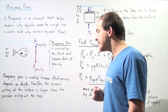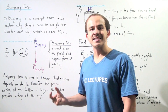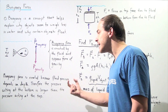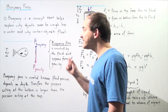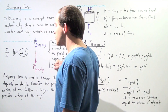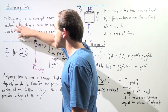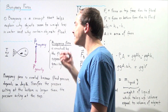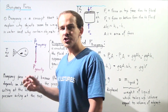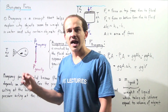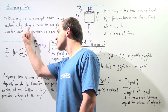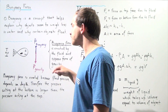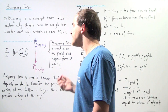The buoyancy force is created because fluid pressure depends on depth. Therefore, the pressure acting at the bottom of the fish is larger than the pressure acting at the top, because the distance from the surface of the water to the bottom of the fish is greater than the distance to the top. The further down we go, the more pressure we have, and this difference in pressure creates the buoyancy force.